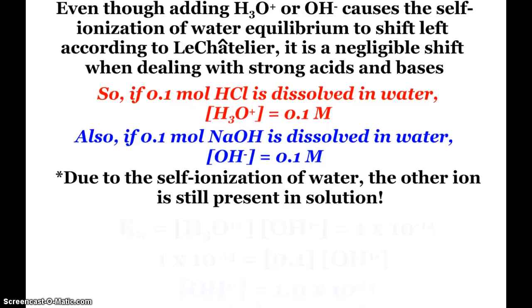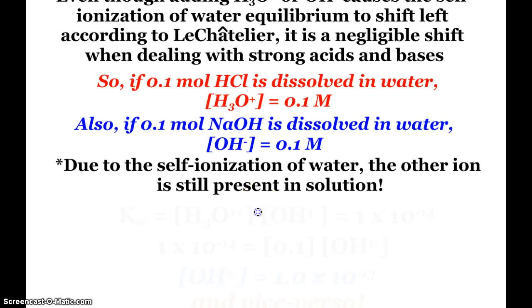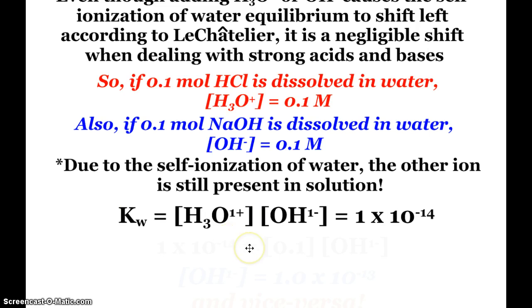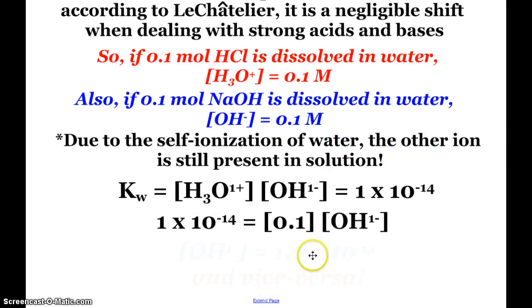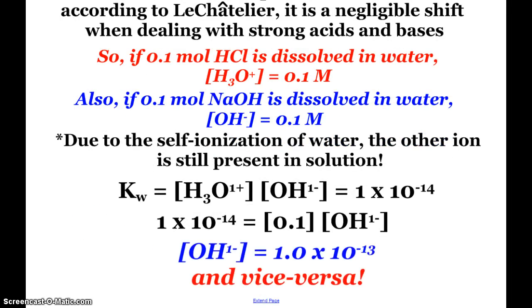Now, due to the self-ionization, the other ion is still present. So again, Kw is 1 times 10 to the negative 14. If I had 0.1 molar, my concentration of hydronium, and I solved this, hydroxide would still be 1 times 10 to the negative 13th molar. Small, but still there. And vice versa, if I would have plugged in 0.1 molar for the hydroxide. So the other ion is still present, although in a much smaller amount.